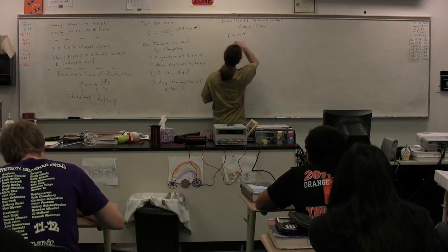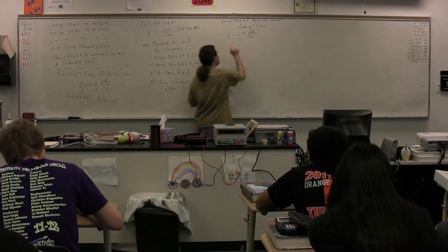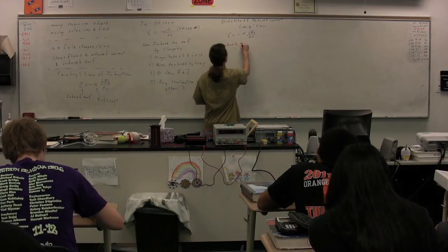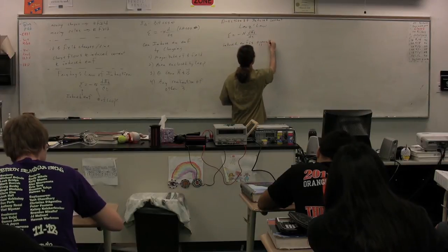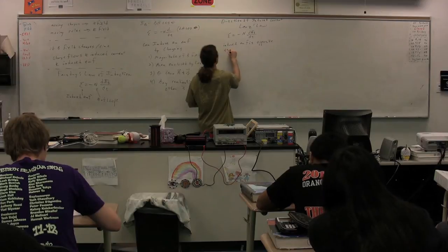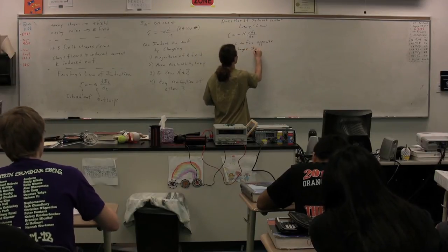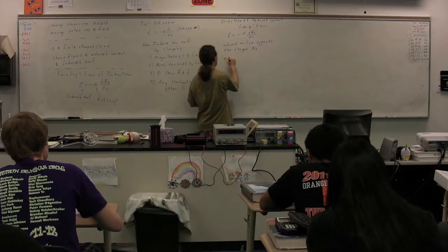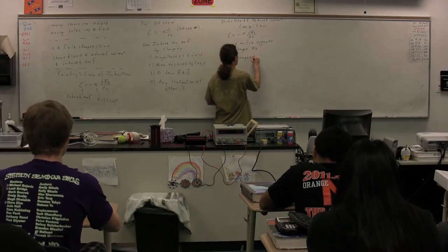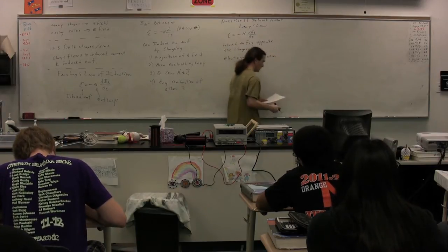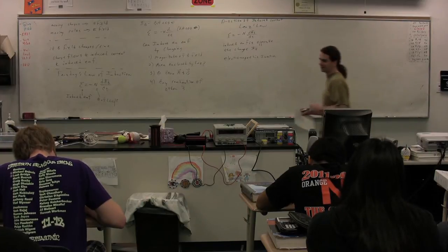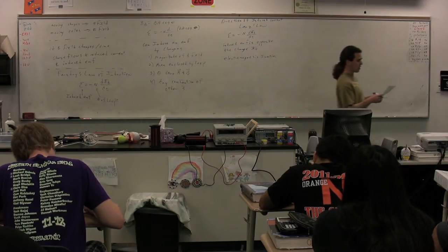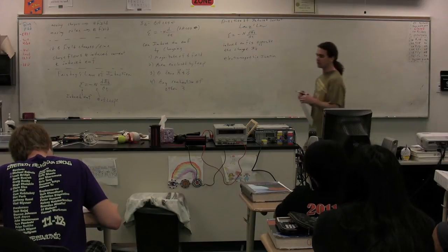The induced EMF equals the negative of the number of loops times the derivative of the magnetic flux as a function of time. This negative indicates that the induced EMF is opposite the direction of the change in the magnetic flux. The term I like to use for this is called electromagnetic inertia — it tries to resist the change in the magnetic field, and it literally induces a magnetic field to counteract that change. We're going to walk through several examples to make sure you understand the direction.